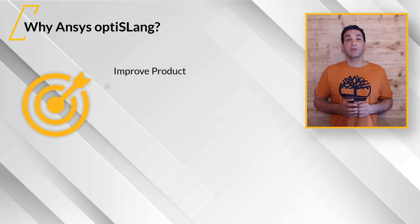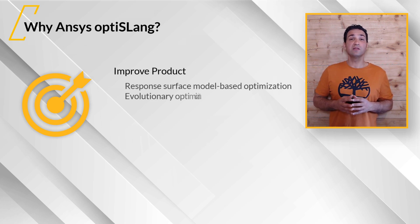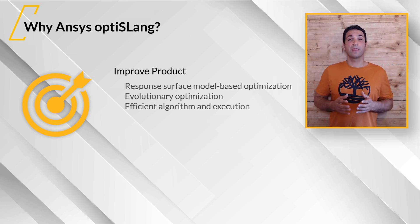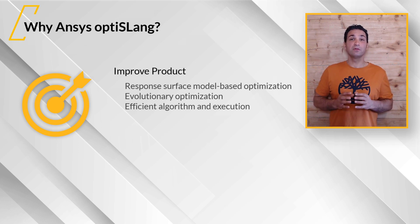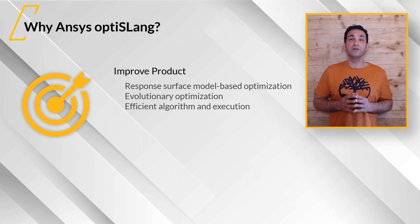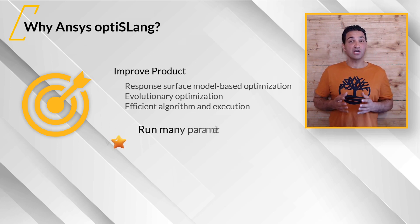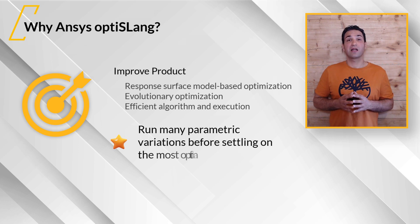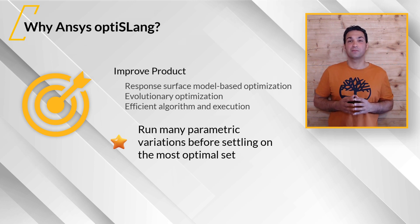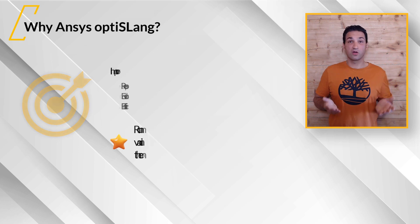Second, improve designs beyond what the human brain can perceive. ANSYS OptiSLang's state-of-the-art optimization algorithms enable the engineer to tweak several parameters, filter out the ones with the highest impact on performance, and run thousands of variations to fully explore all possibilities before settling on the most optimal set of parameters. All of this is done automatically.